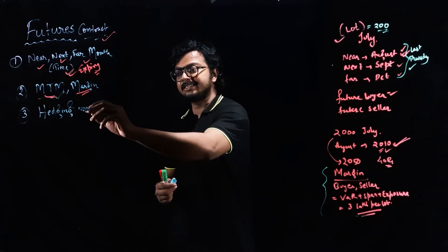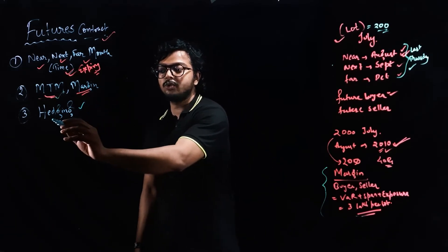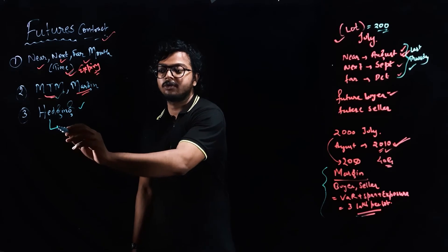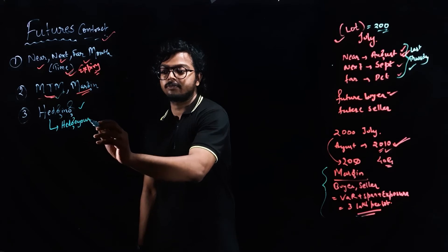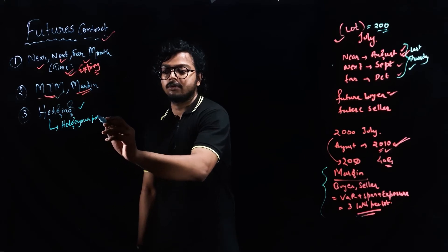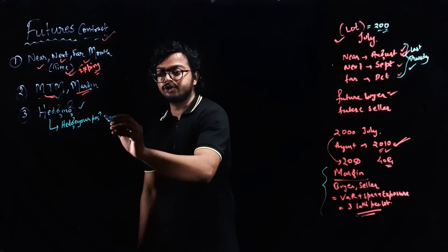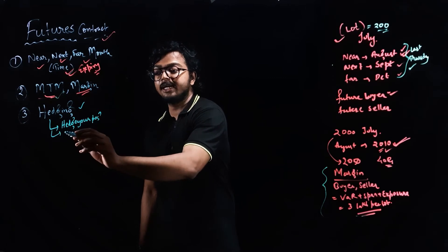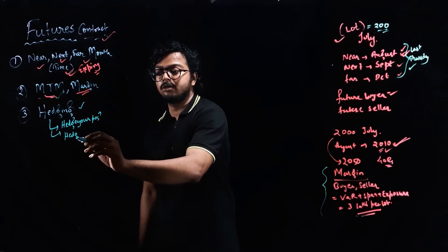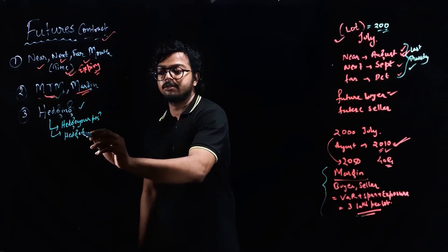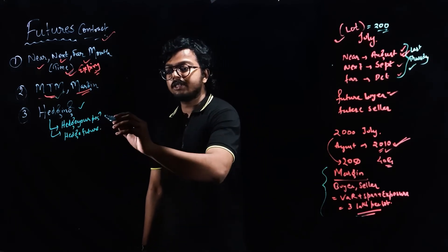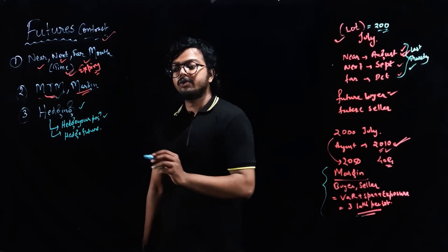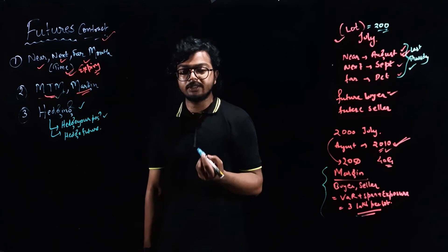Now let's see hedging. Hedging is of two types. First, you can hedge your position using futures. And second, you can hedge a future position itself. Now let's see how you can hedge your positions using futures.